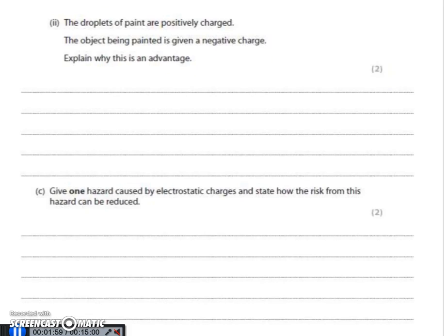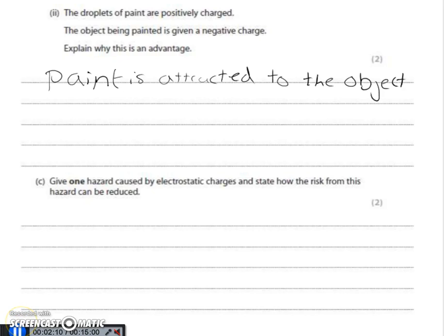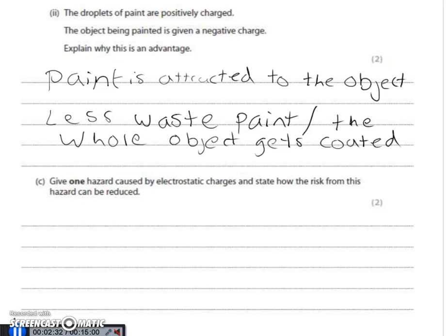The next question says the droplets of paint are positively charged and the object being painted is given a negative charge — explain why this is an advantage. If the paint is attracted to the object, you're not going to waste paint because it's getting attracted rather than falling to the ground. Also, the paint is going to get attracted around the sides and the back of the object, so you cover the whole of it, even the parts that aren't easy to reach. So: less waste, and the whole object gets coated.